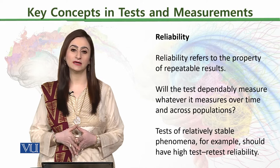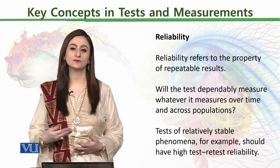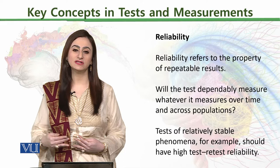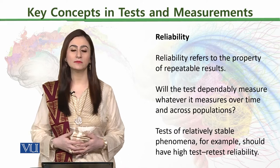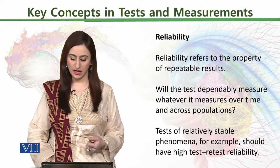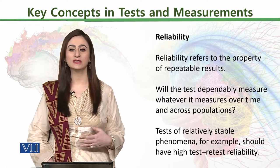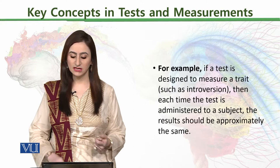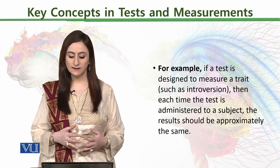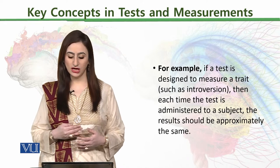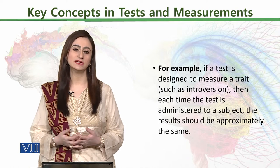then whatever intelligence test is applied to them will be reliable, and all those tests will reflect them as a below-average intelligent person. This is the case when we talk about reliability — it is something that when repeated gives you the same results. For example, if a test is designed to measure a trait such as introversion, then each time the test is administered to the subject, the result would be approximately the same.